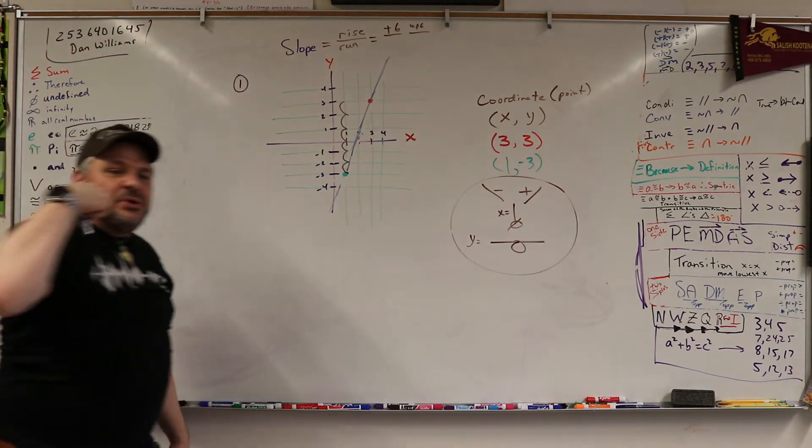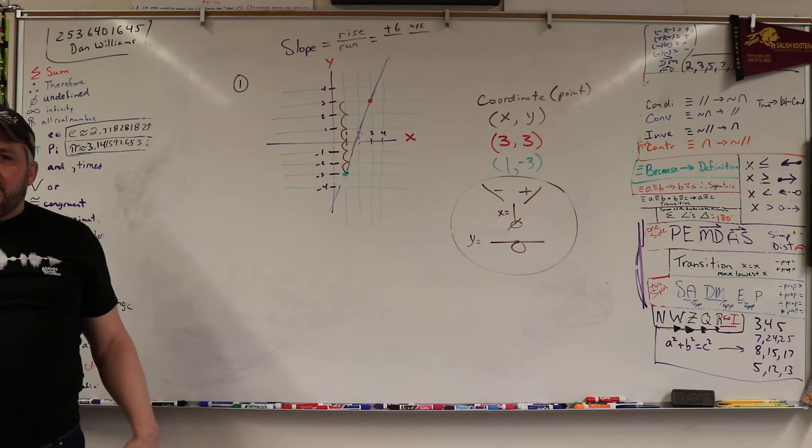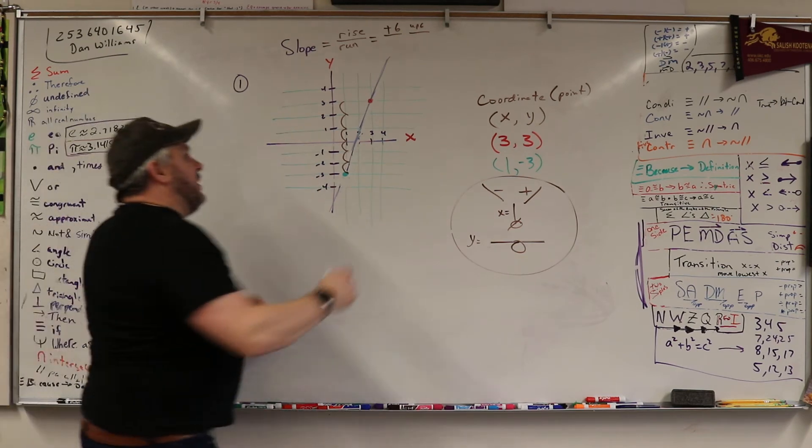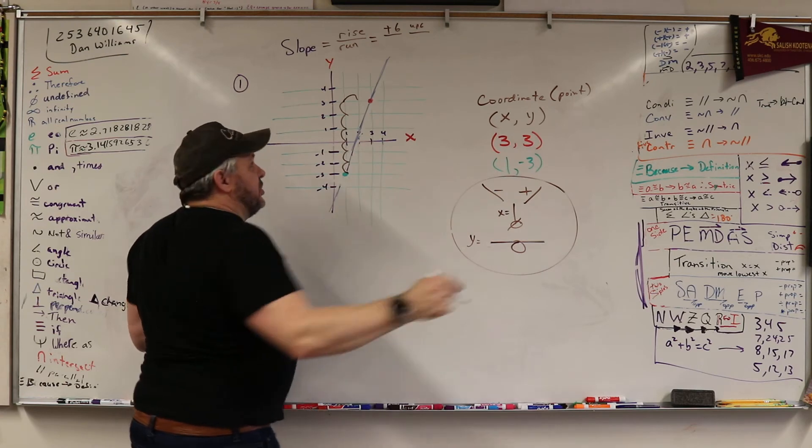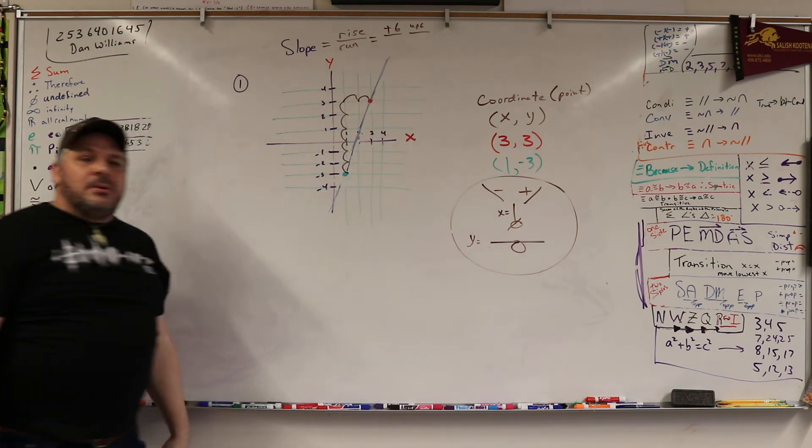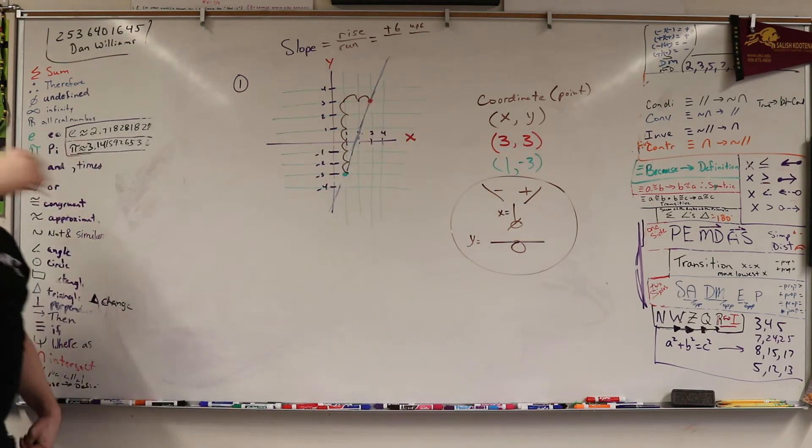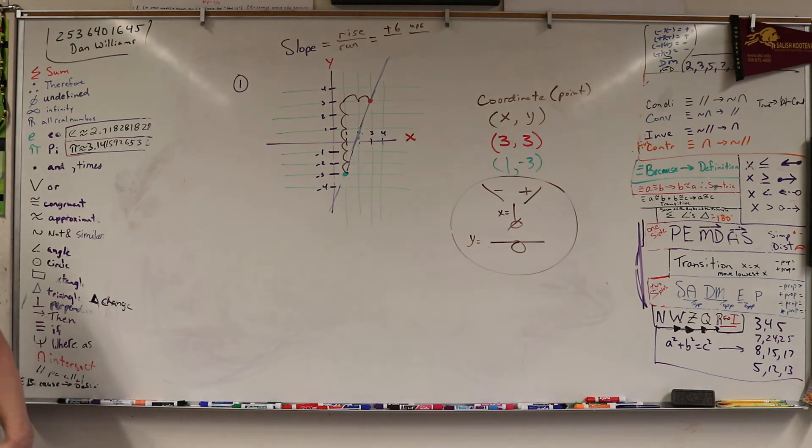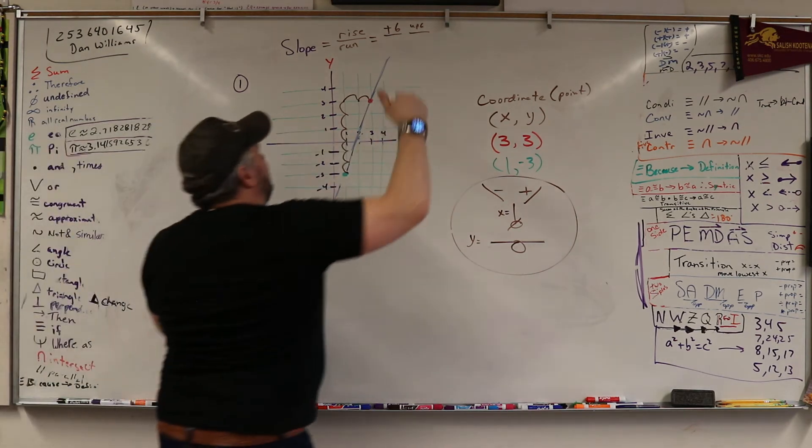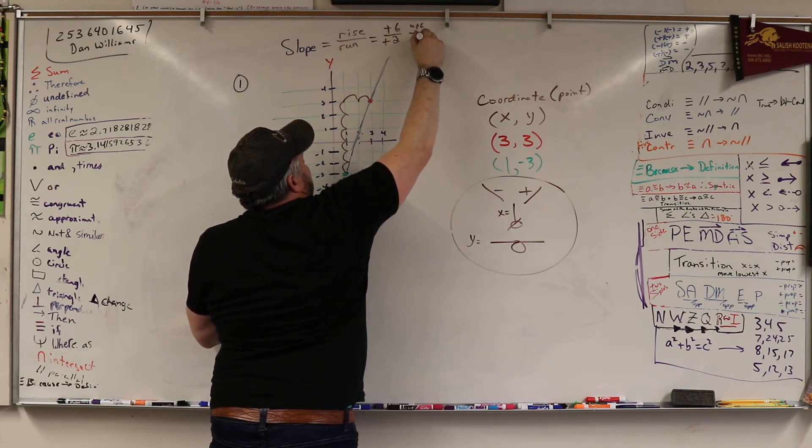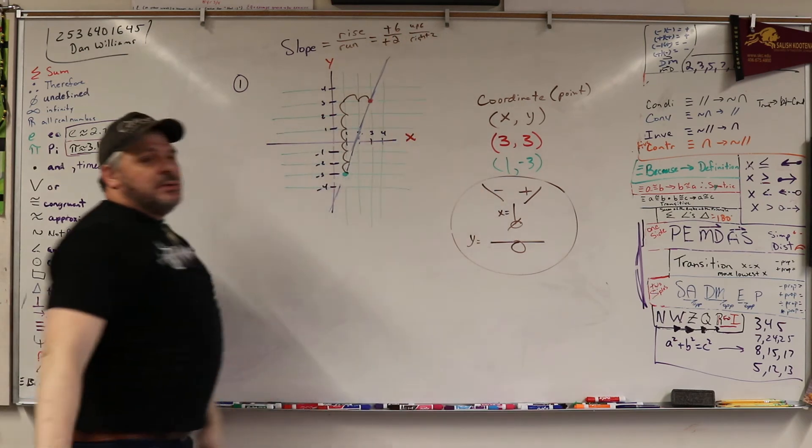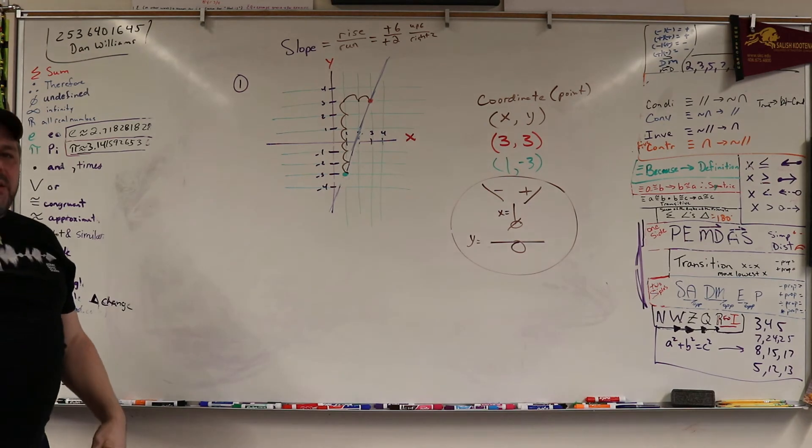And, then I went right or left? Right. Right. How many? One. Three. Two. Two. So, I went two. Yeah. Right? So, I went over two. So, I went positive two. I went right. Two. Okay?